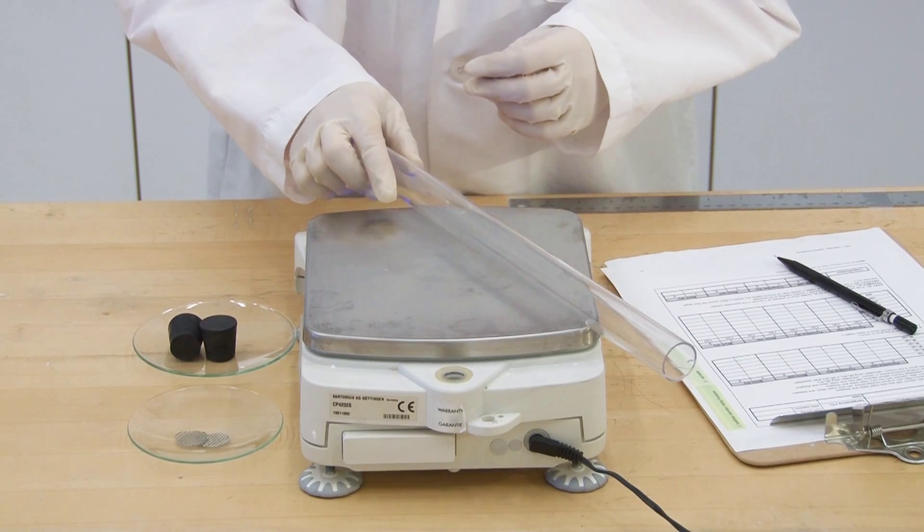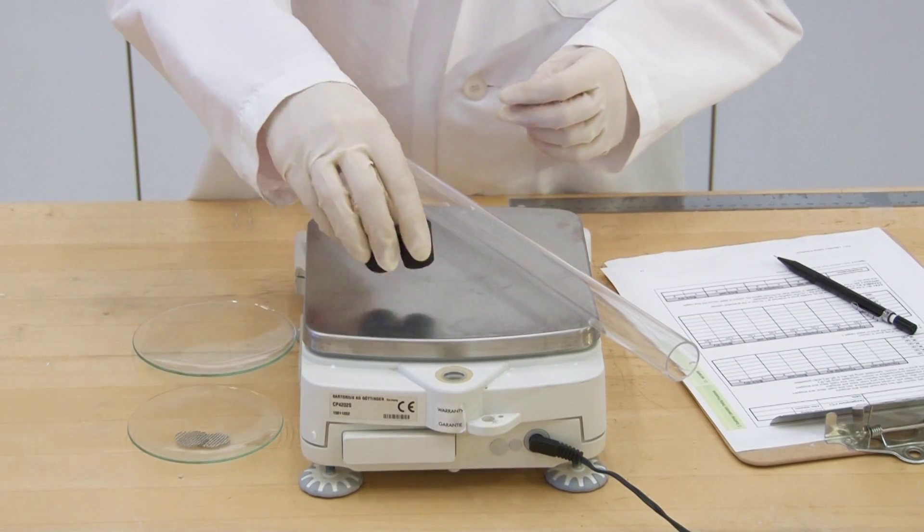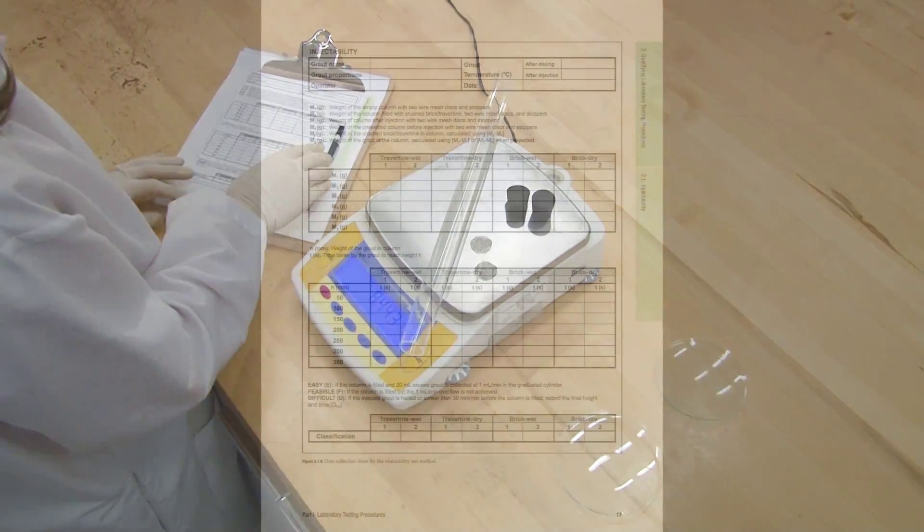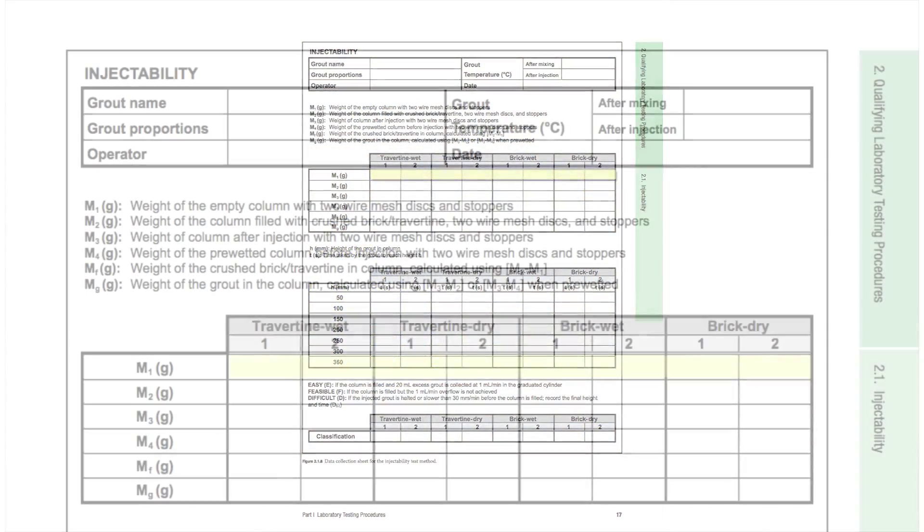Weigh the column including solid rubber stoppers and two wire mesh discs to the nearest 0.1 gram and record as M1 on datasheet.